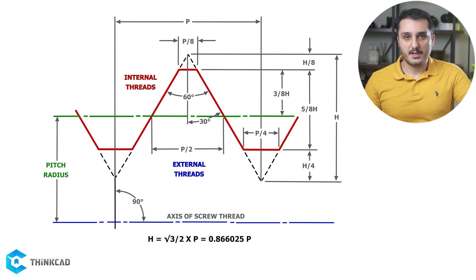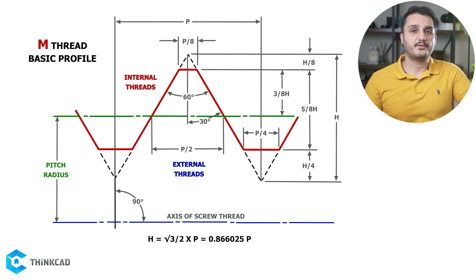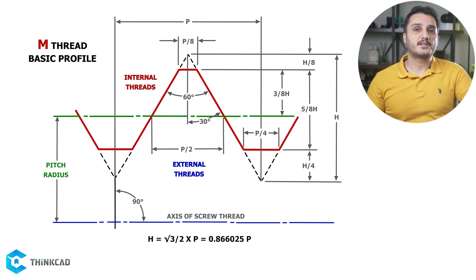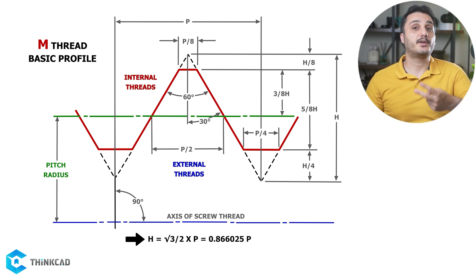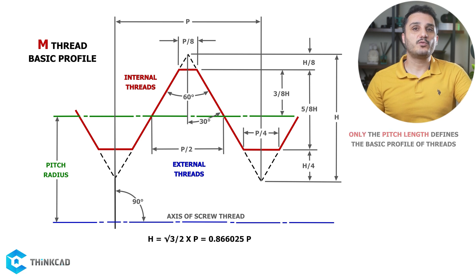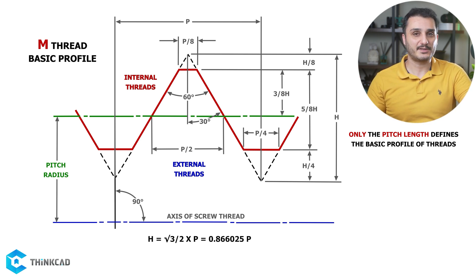Now look at this picture. This is the profile schematic of the M-thread, which has pretty unique ratios between its features. The flank angle is a constant 60 degrees. Something really important to take from this schematic is that every single relation is with respect to the pitch length P. Even H is derived from P by multiplying the square root of 3 divided by 2, which is sine of 60 degrees. This means only the pitch length defines the dimensions and exact profile of the threads.